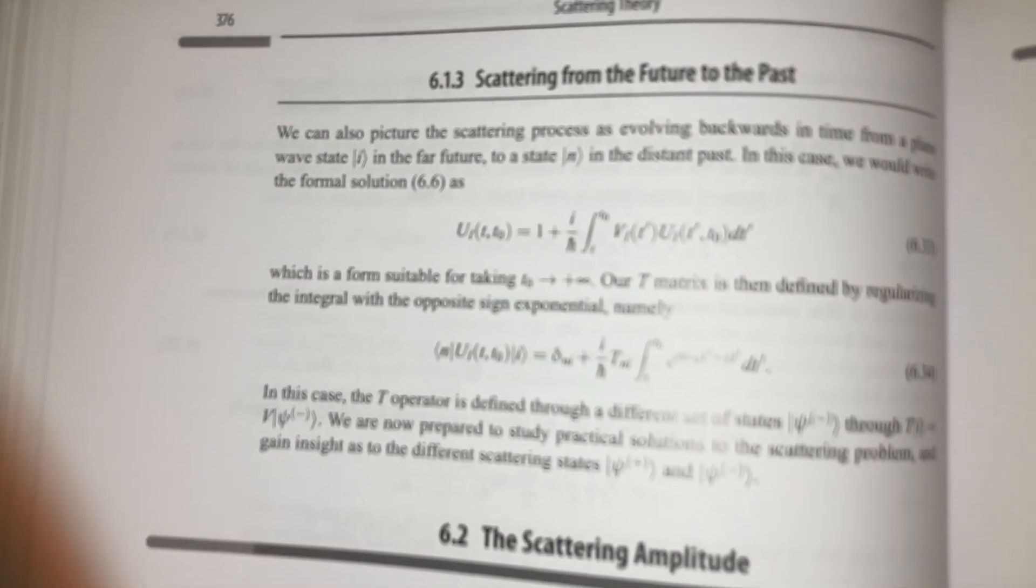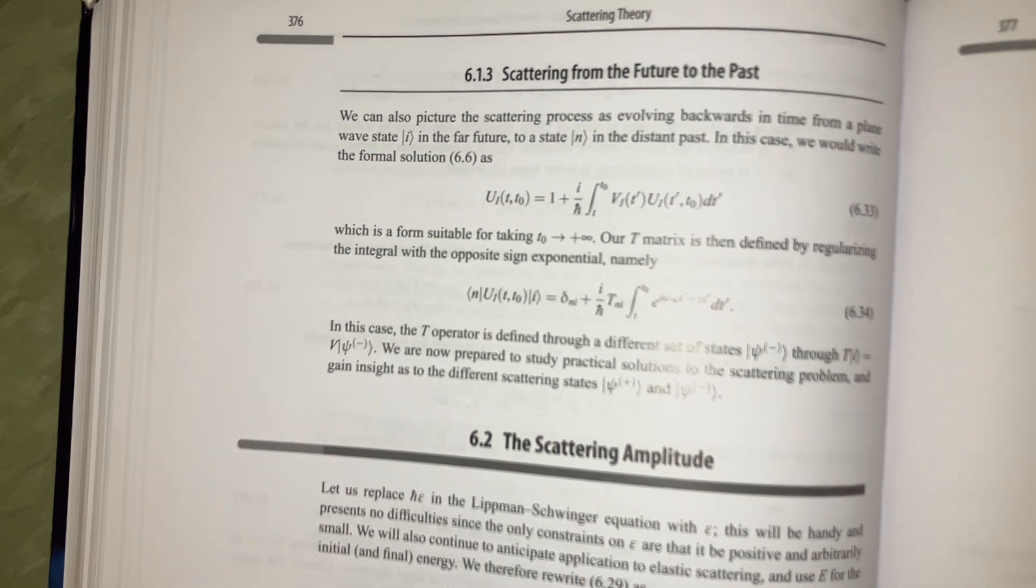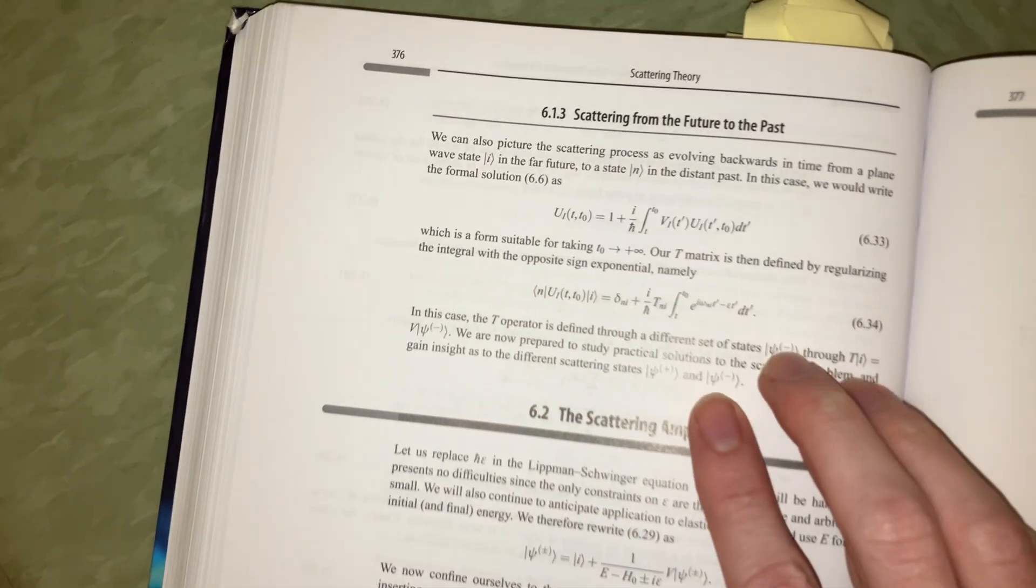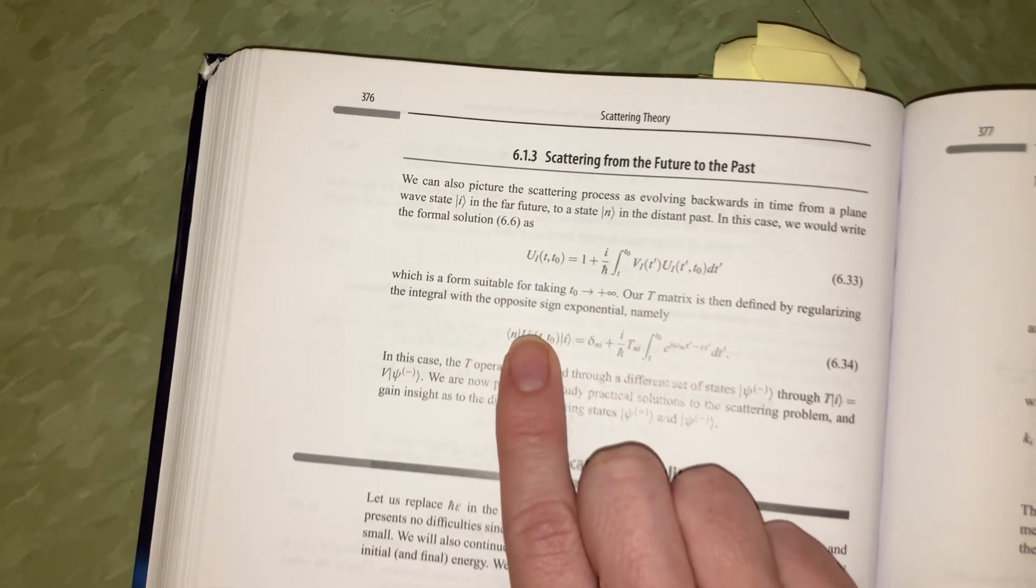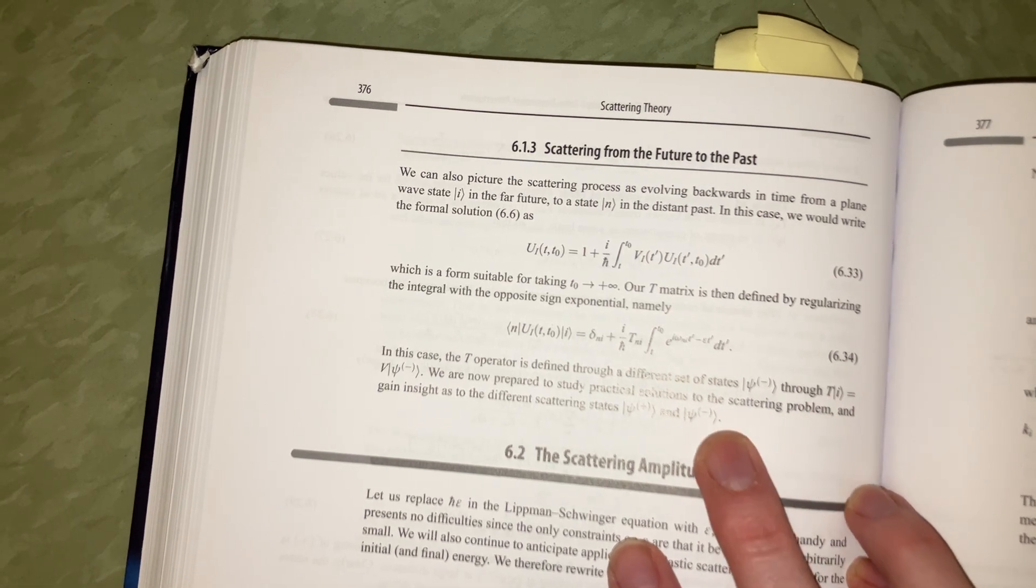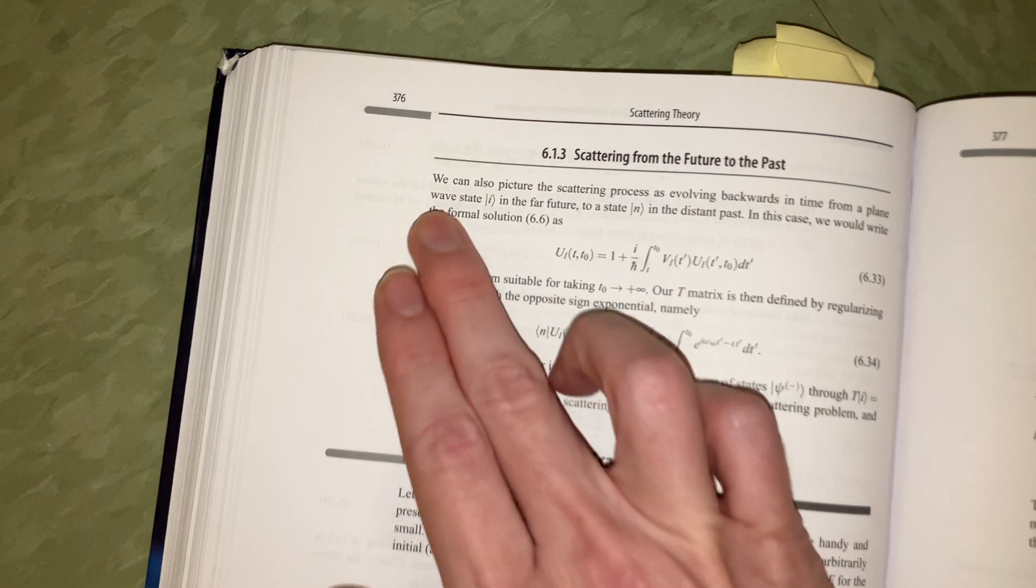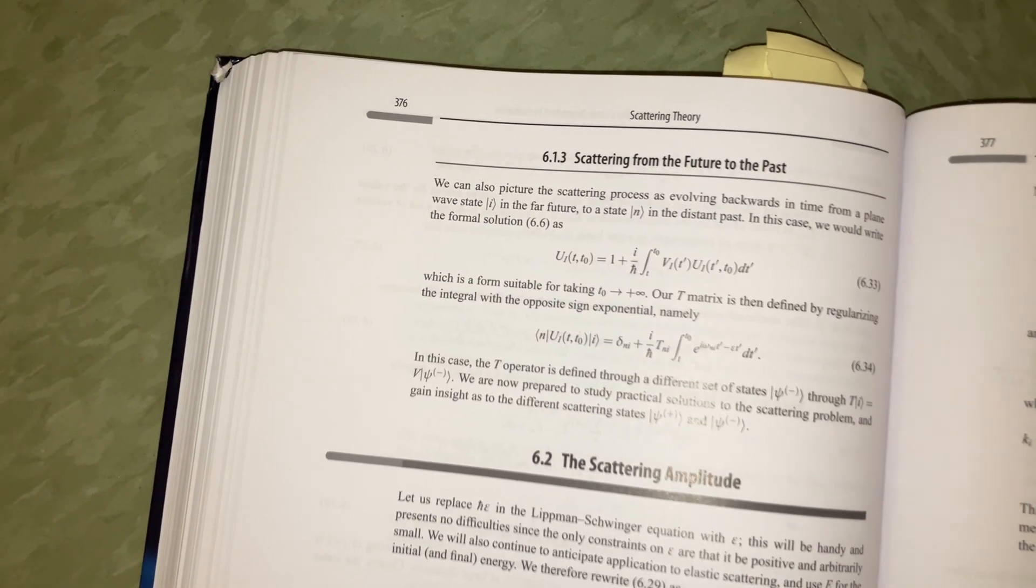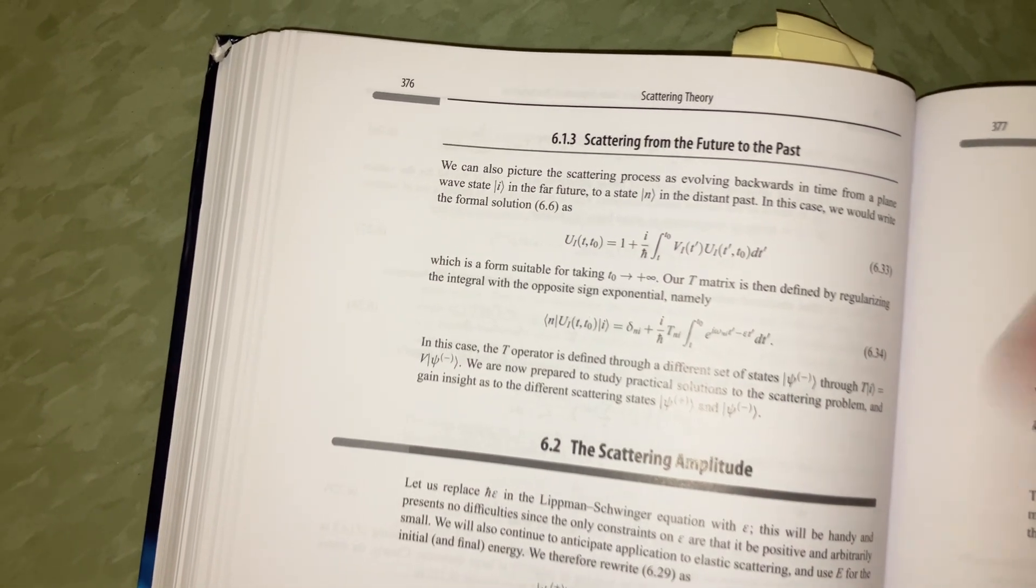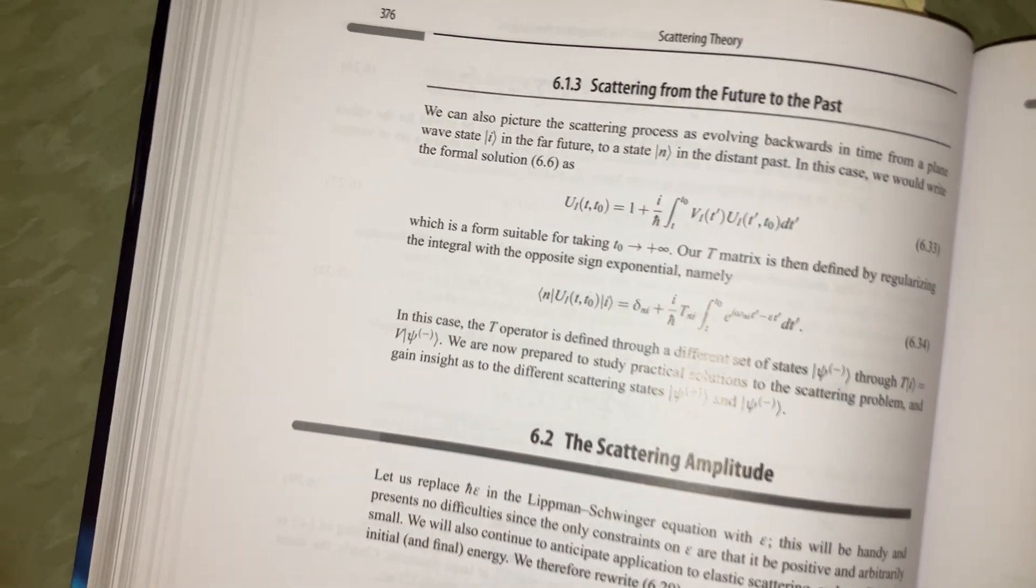So, we can picture the scattering process as evolving backwards in time from a plane wave state i to the future to a state n in a distant case. So, we'll write a form of solution like this. It's a form of suitable taking from T0 to infinity. The T matrix is defined by recognizing the integral from the opposite side. Different sets of states. Hmm. Evolving backwards in time from a plane wave state i to a state n. I think maybe what they're trying to do is, like, recover the transformations.